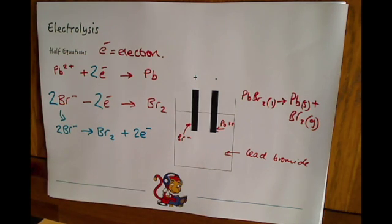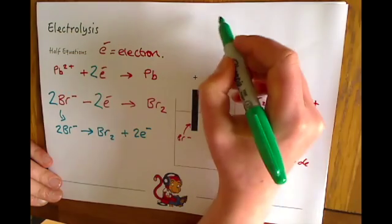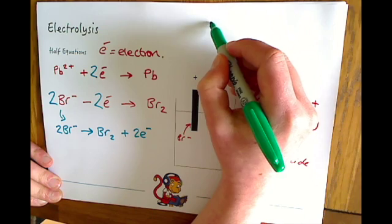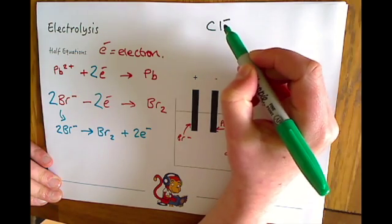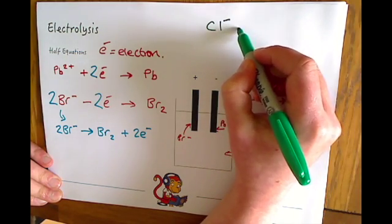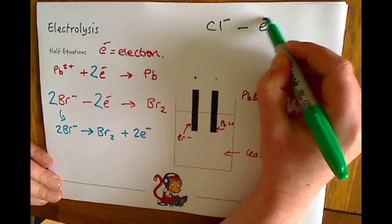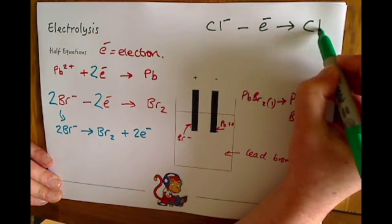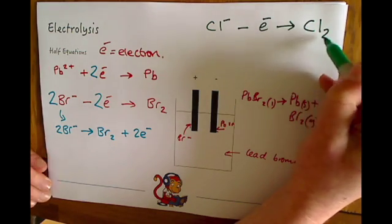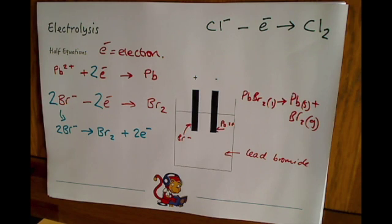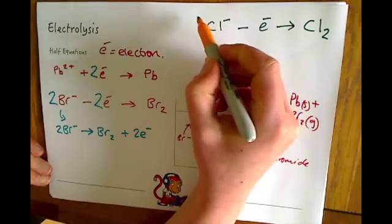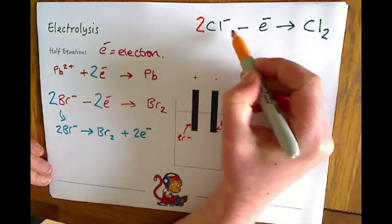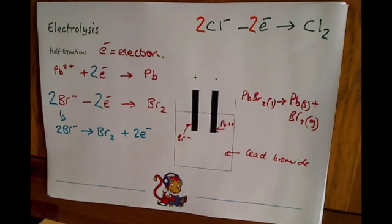So for another example you might see something like chlorine. Chloride ions in the electrolyte to be Cl- and they would lose electrons and turn into chlorine, which again is one of those diatomic molecules that hangs around in pairs so we have the Cl2 always there. And then we would just balance that, so we'd need because of the Cl2 we'd need two Cl- and then we'd need two electrons.